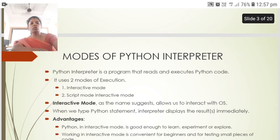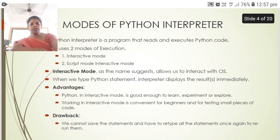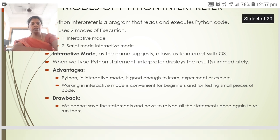The next is modes of Python interpreter. Python interpreter is a program that reads and executes Python code. It uses two modes of execution: interactive mode and script mode. Interactive mode allows us to interact with OS. In the advantages, interactive mode is good enough to learn, experiment or explore. The drawbacks: we cannot save the statements and have to retype all the statements once again to run them.